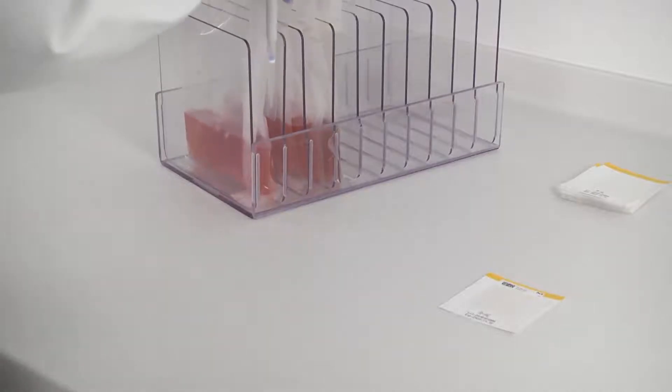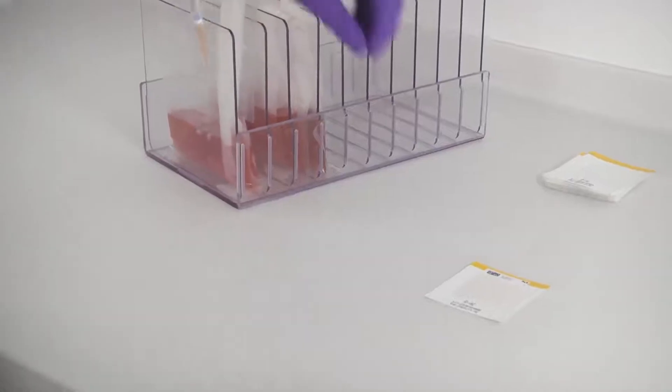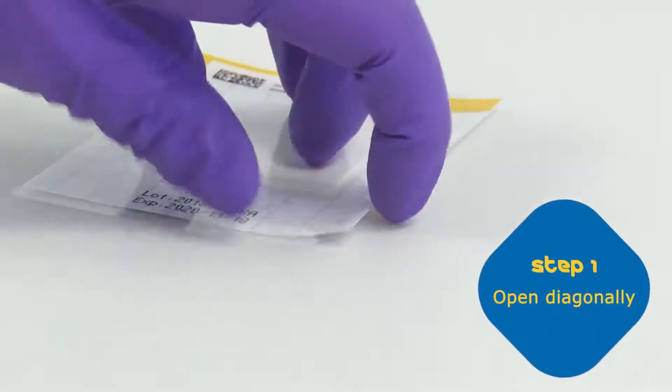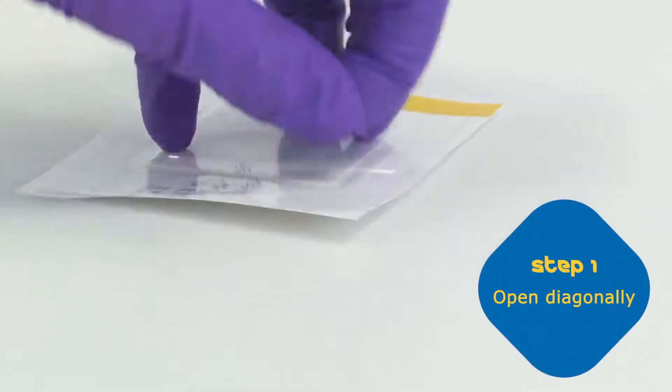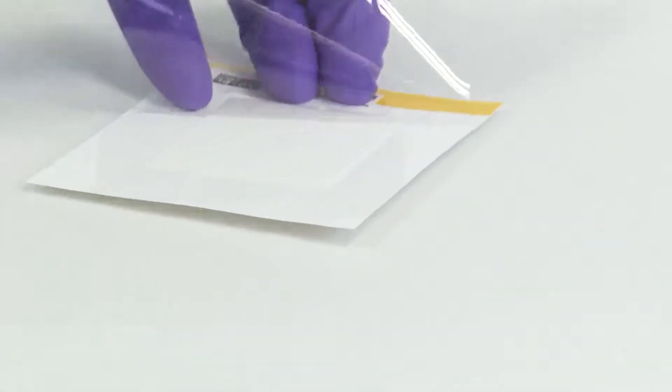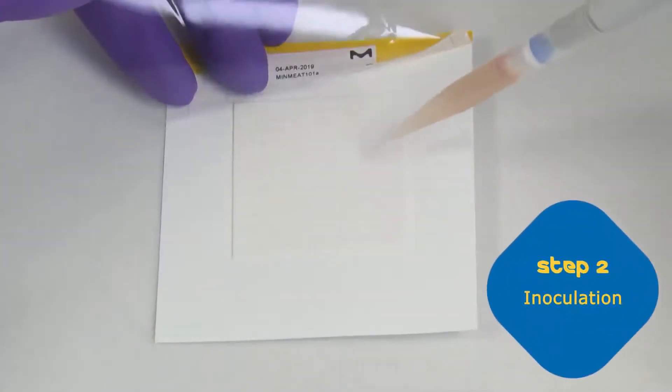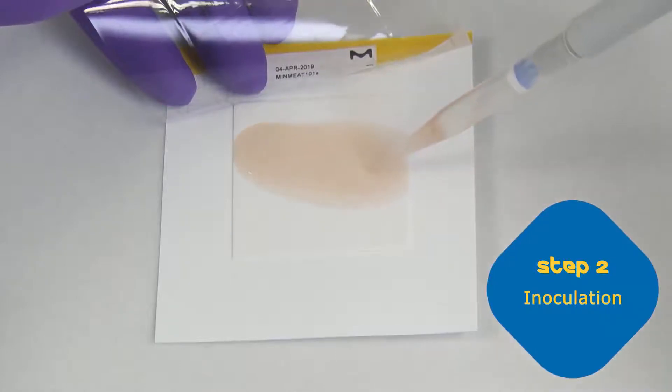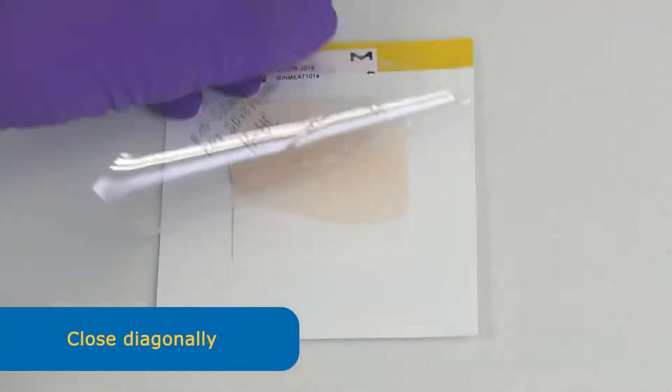With every MC MediaPad, one milliliter of sample can be tested. To ensure proper closure, open the lid diagonally before applying the sample. Apply the sample to the middle of the pad. It will automatically distribute. Close the lid diagonally.